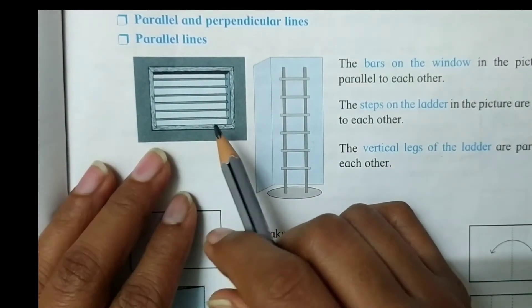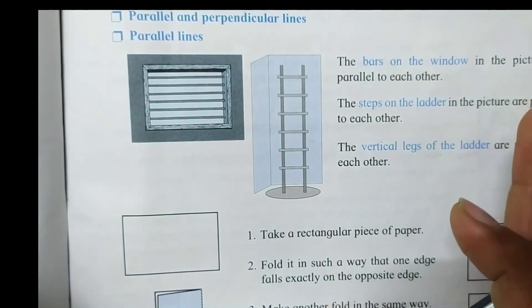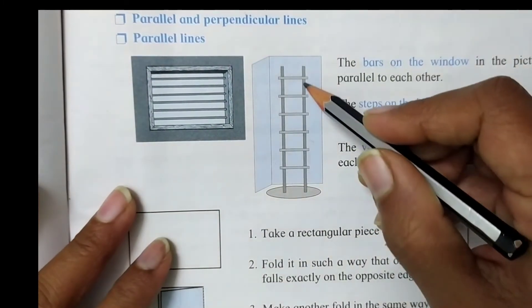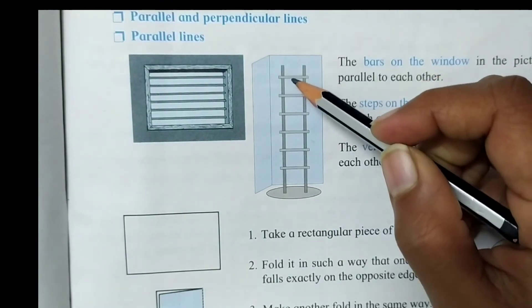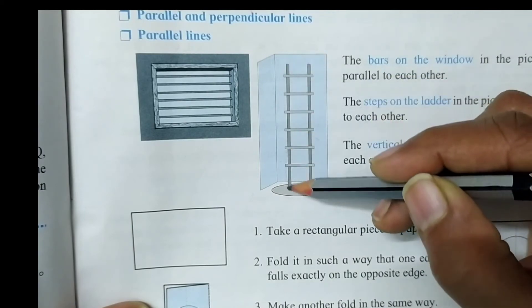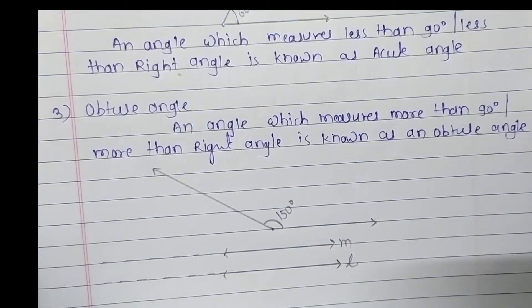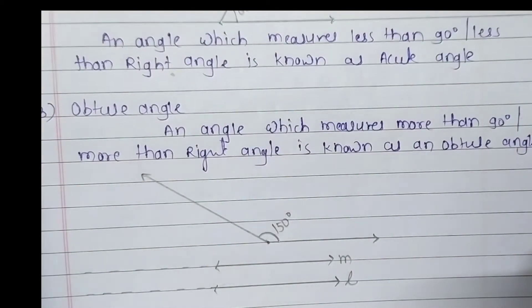Here is another example: look at the bars of the window. When we extend the bars, we find that they do not cut each other — they are also an example of parallel lines. Here is a ladder: the steps of the ladder are also parallel lines, and the two vertical lines of the ladder are also parallel to each other. Parallel lines are lines which do not intersect or cut each other.